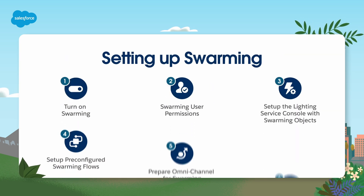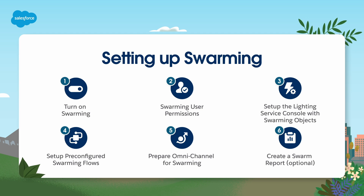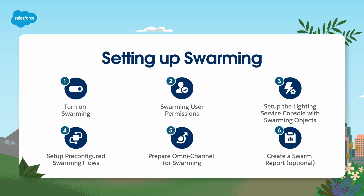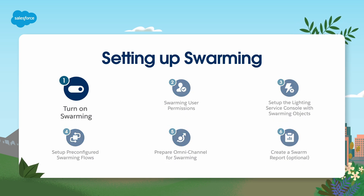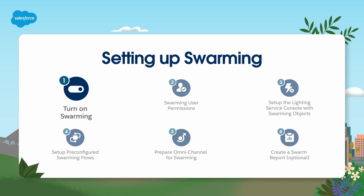Now we're going to cover how to set up swarming at a high level. First, you'll need to connect your Slack app and your Salesforce instance. Then follow these steps in order. You can click on the hyperlinks in each step to get more details. Turn on Swarming from Setup — in the Quick Find box, type in Swarming, and then select Swarming.